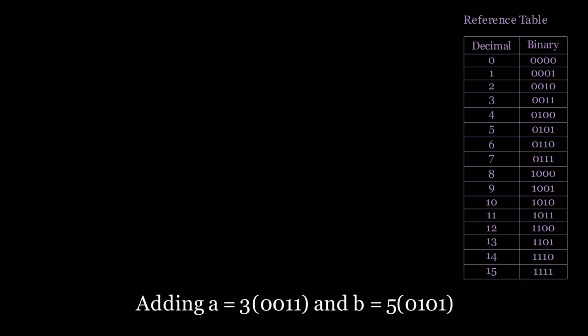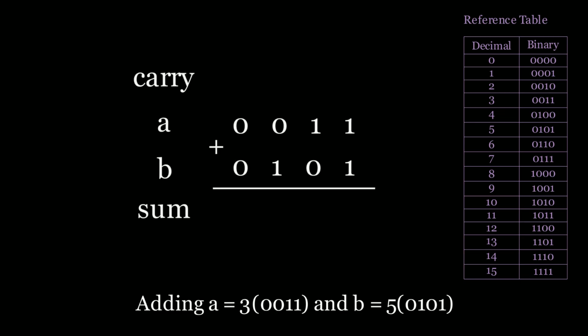Let's get started with an example. I want to add up three and five, so a is equal to three and b is equal to five. Let's see how we sum this up in binary. Three is 0011, five is 0101, and if you're confused you can reference the table on the right. We'll go back to third-grade math and start all the way on the right-hand side.